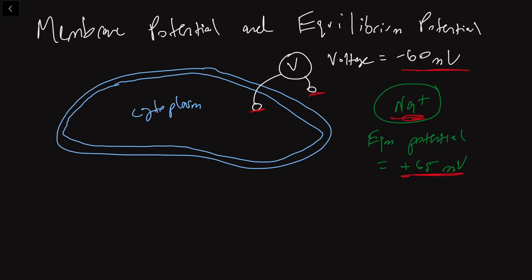And so the way to interpret this and to look at these two potentials and say what will happen is this. So basically think about it from sodium's perspective right now. Sodium wants things to be at plus 65 millivolts, and the cell wants things to be at minus 60 millivolts.